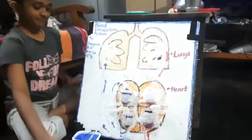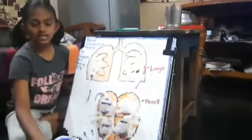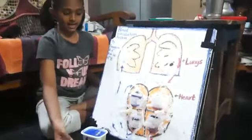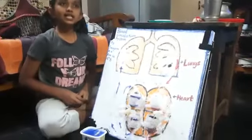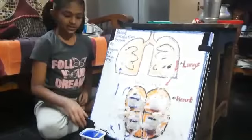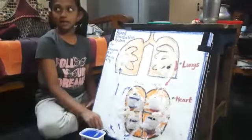Now, the cells present in our body absorb the nutrients, absorb the oxygen from the blood and release carbon dioxide to the blood. When carbon dioxide is released, the blood color will change into blue color and this is called impure blood.